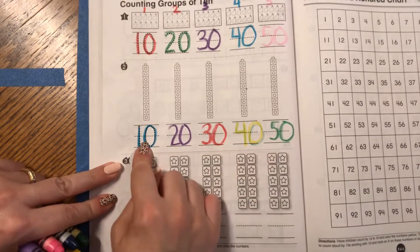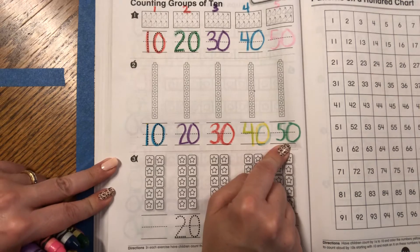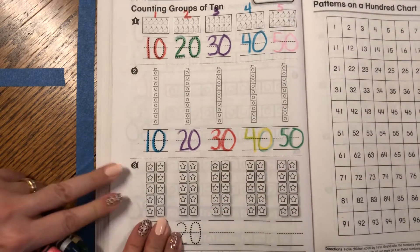Let's count. 10, 20, 30, 40, 50. Excellent job. 50. Okay.